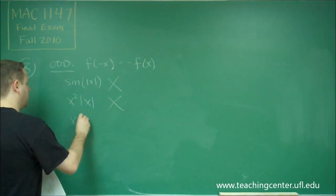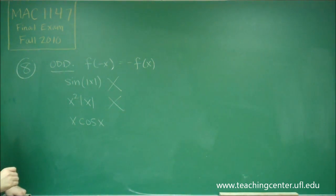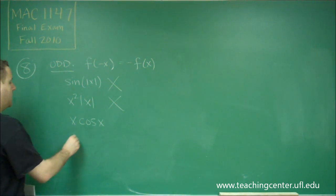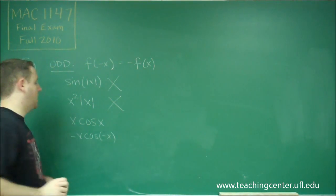So, that gives us our last function, but let's just check to make sure. If we plug in negative x here, we would get minus x cosine of minus x.